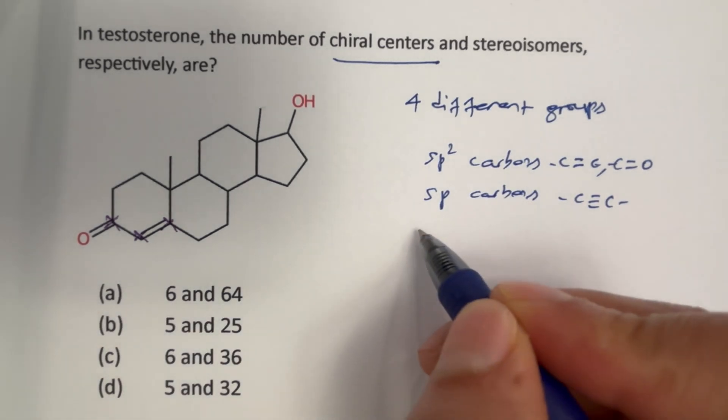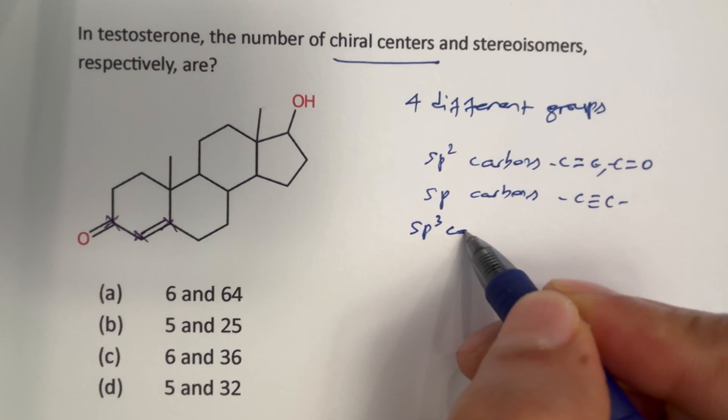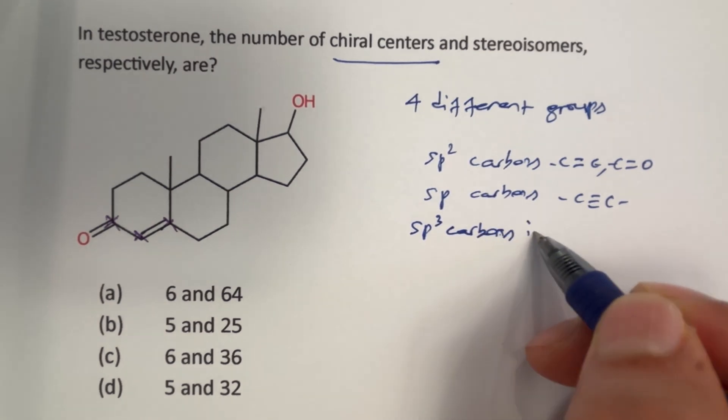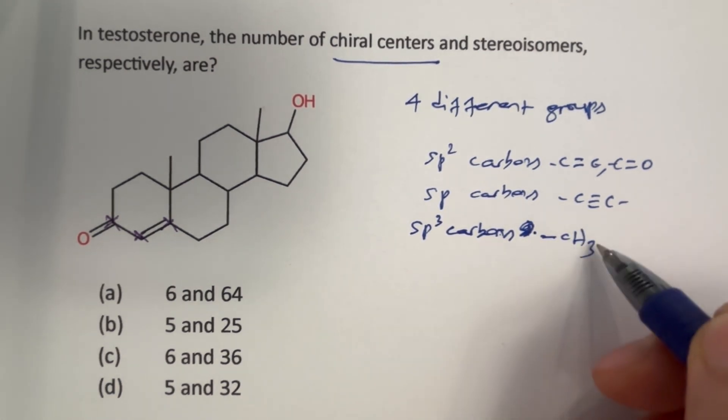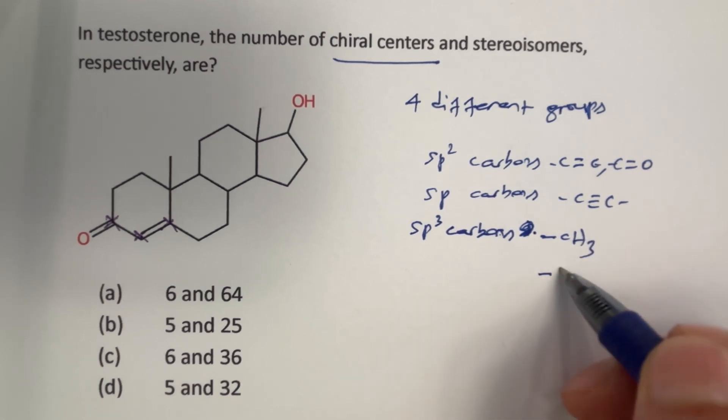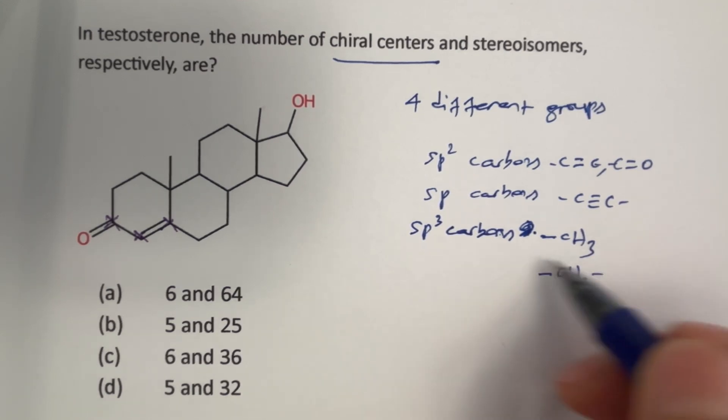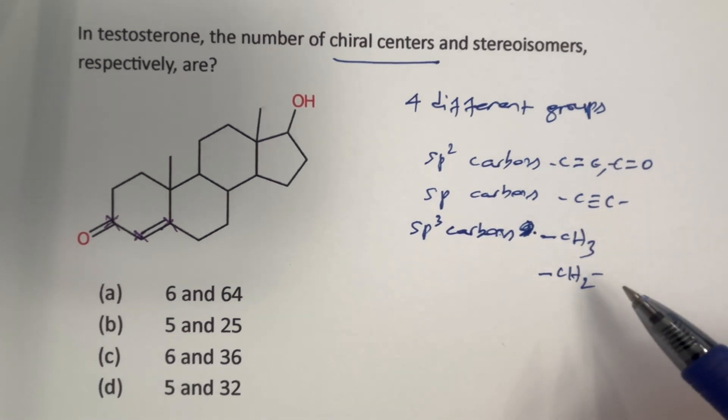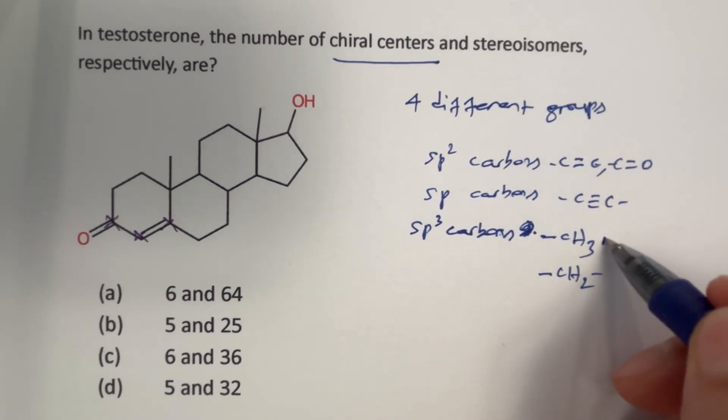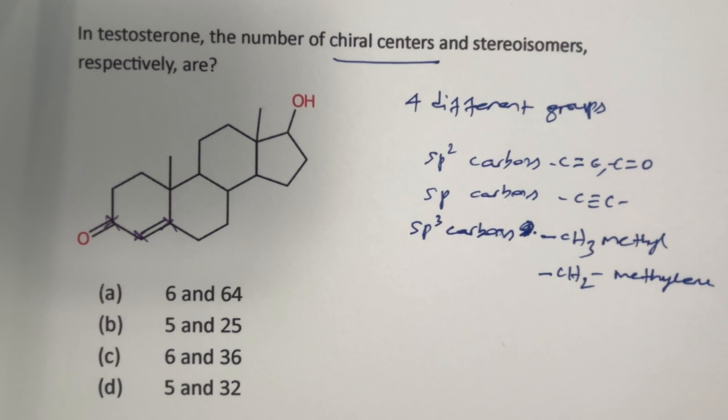We can also eliminate sp3 carbons where if it is a methyl group. So if you have a methyl group, we should eliminate those because we have three hydrogens here. Even if it is a methylene group, we should eliminate because we have two hydrogens. So even if we have two different units attached to here, in total, we have three different units, not four different units. So therefore, methyl group and methylene groups we should eliminate.